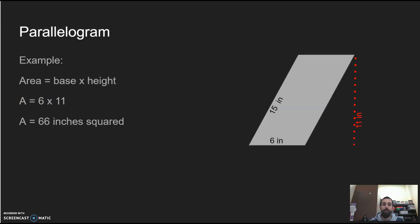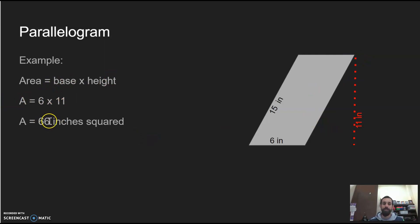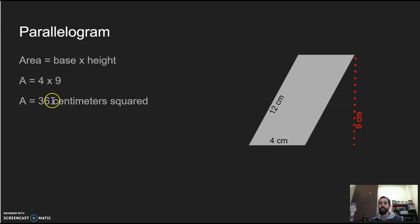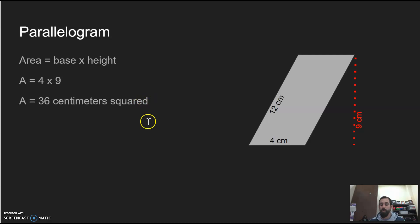Now we're moving on to the parallelogram — less familiar. Remember, it's still base times height, and height is when it's straight up and down. Diagonal lines are not your height. Our base here is 6 and the height is 11, so 6 × 11 = 66 inches squared. For your turn, the base was 4 and the height was 9 — the 12 was just a distracting number, so we didn't use it. 4 × 9 = 36 centimeters squared.